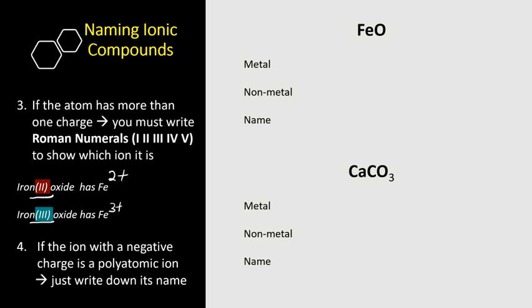Let's do another example. Let's work with FeO. So the metal is iron. Remember, iron has two charges: 2+ and 3+, and we don't know which charge it is right now. We've got to figure that out. Write down the non-metal, so O is oxide.